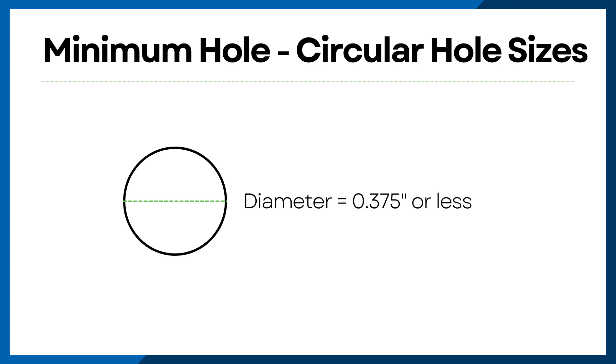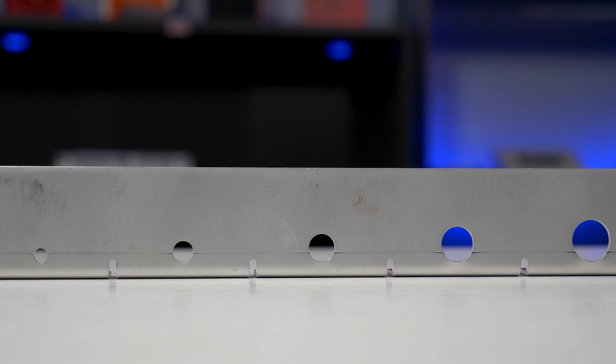Plus, there's another thing to keep in mind. For circular holes, our testing has shown that the size of the hole can affect its ability to withstand the bending process. A hole with a diameter of 375 thou or less is generally good to go, though holes above this size will start to show signs of warping.